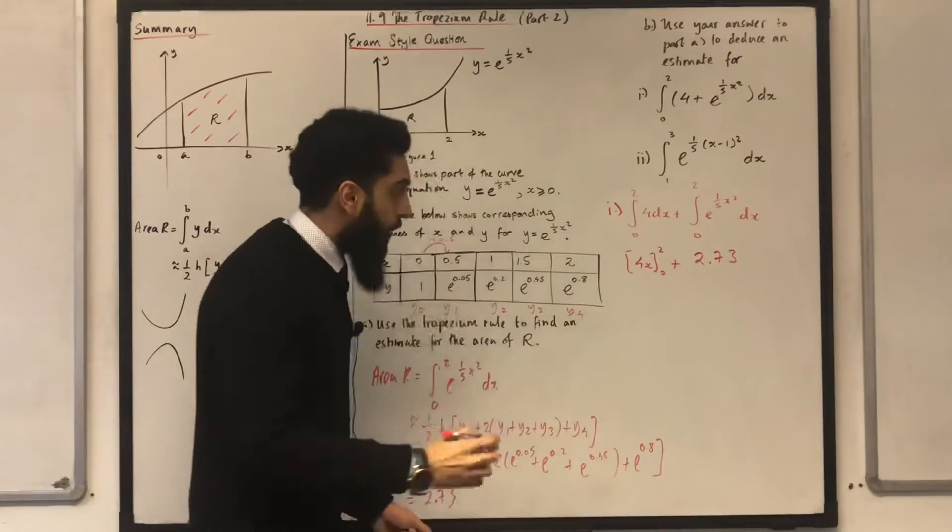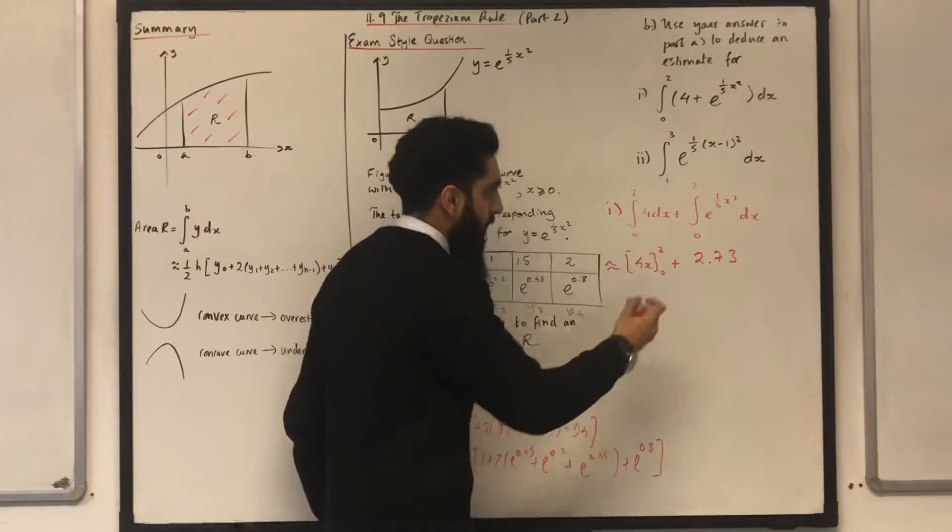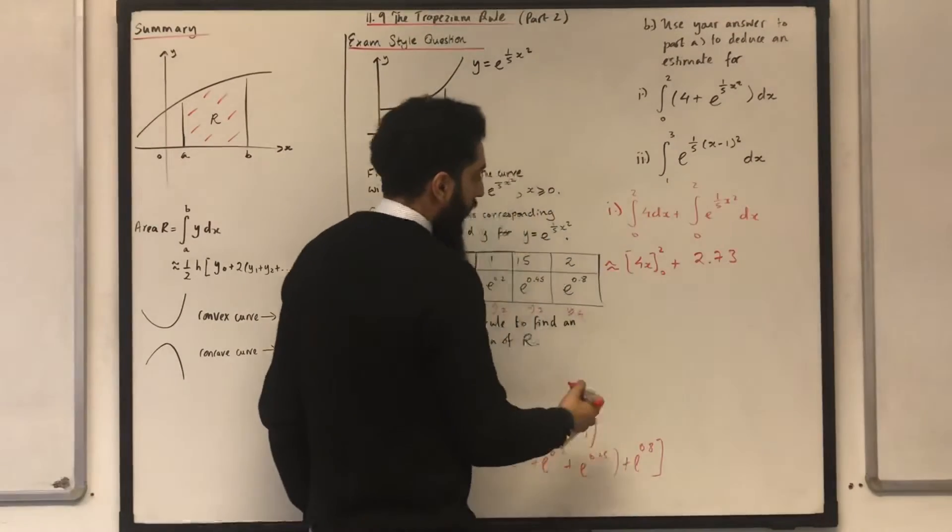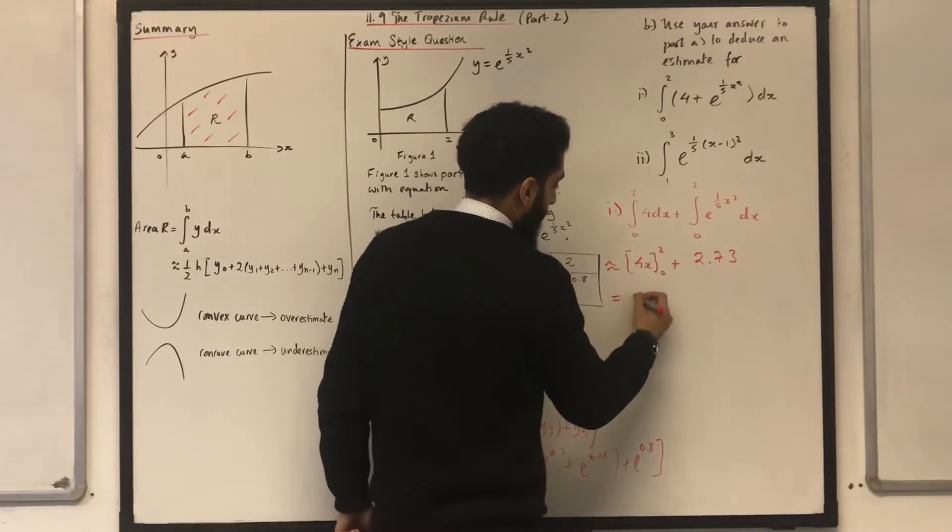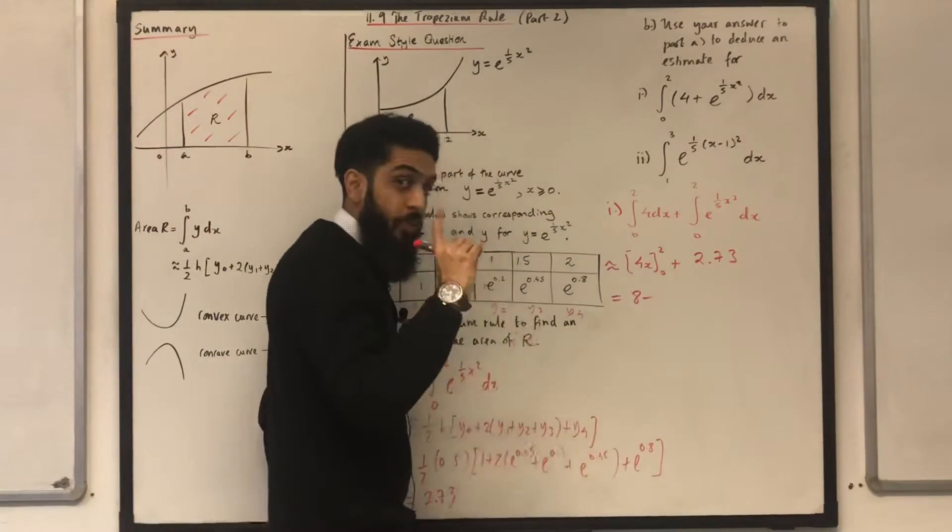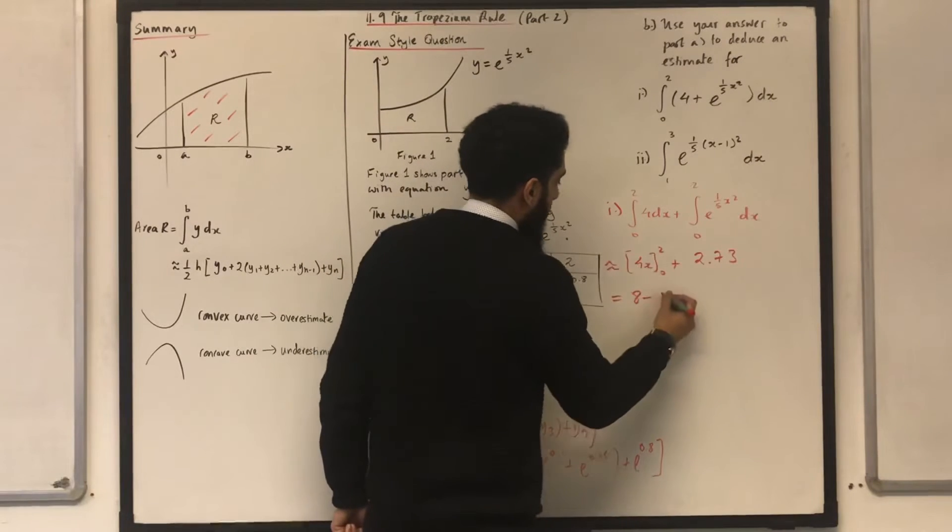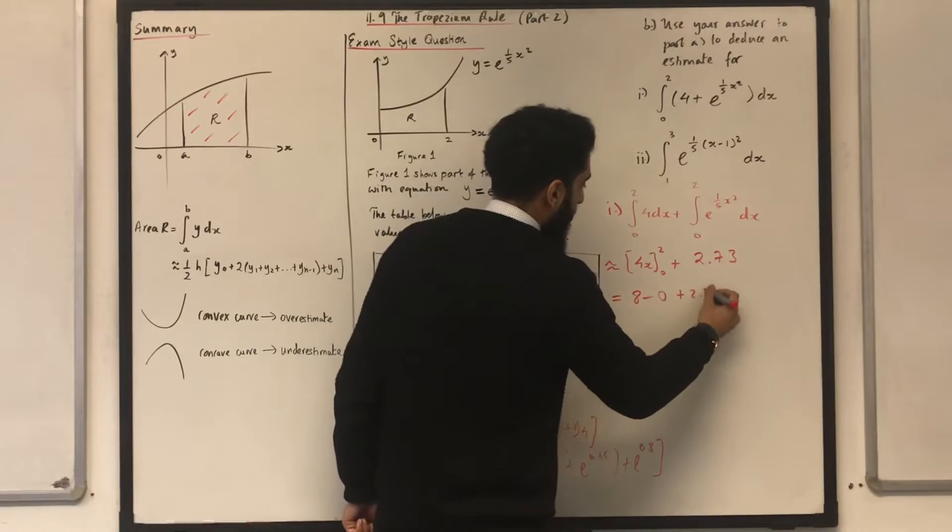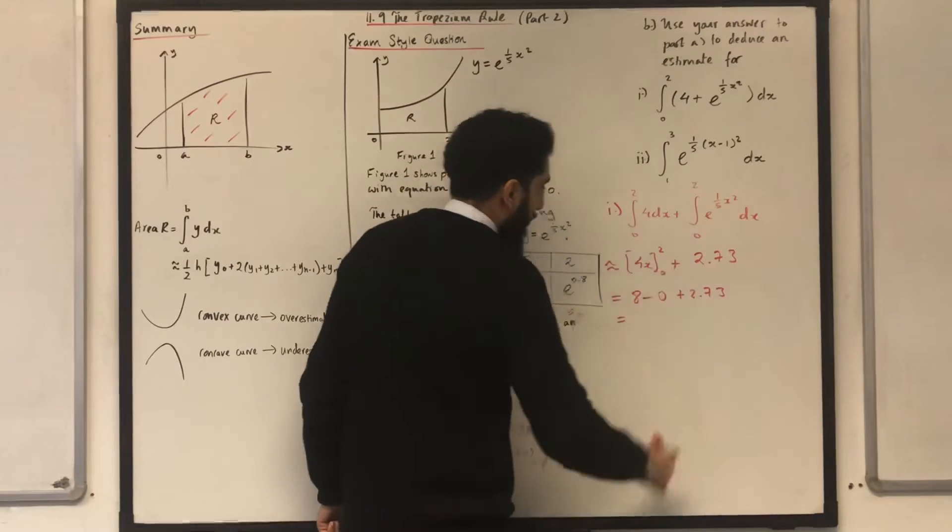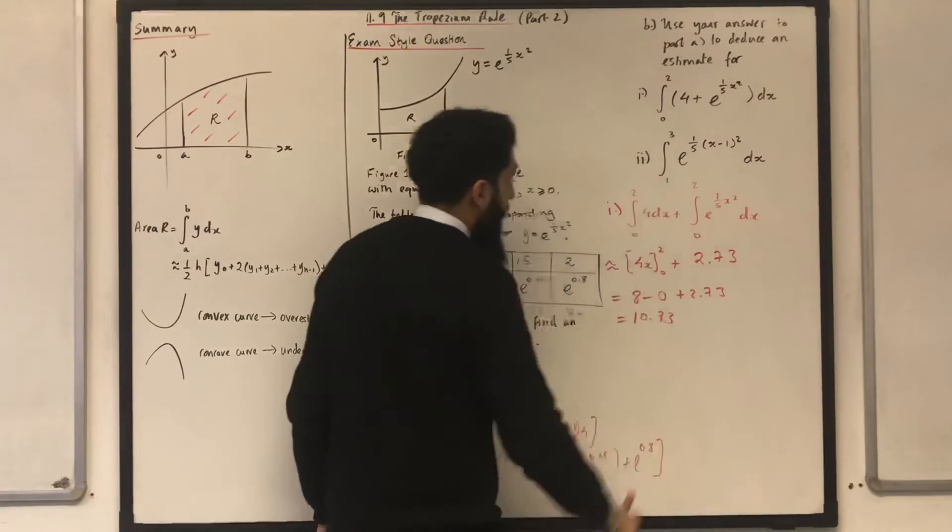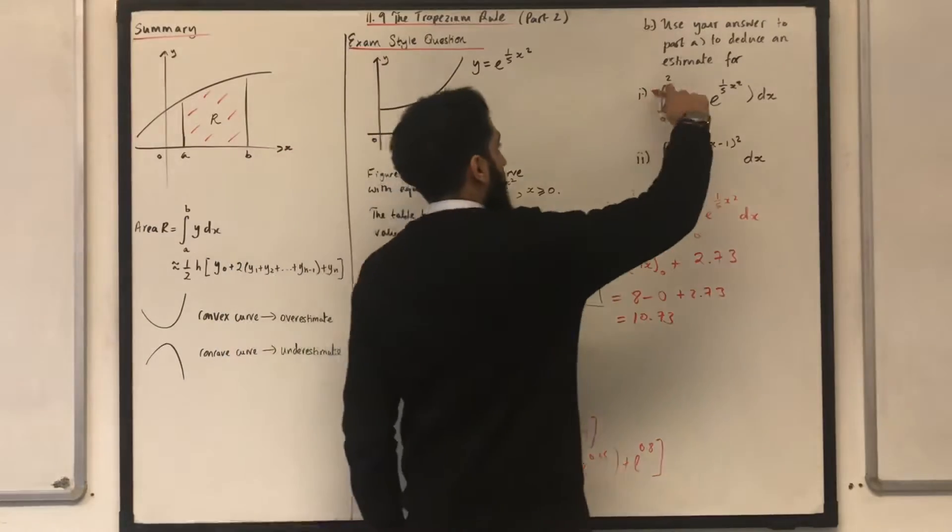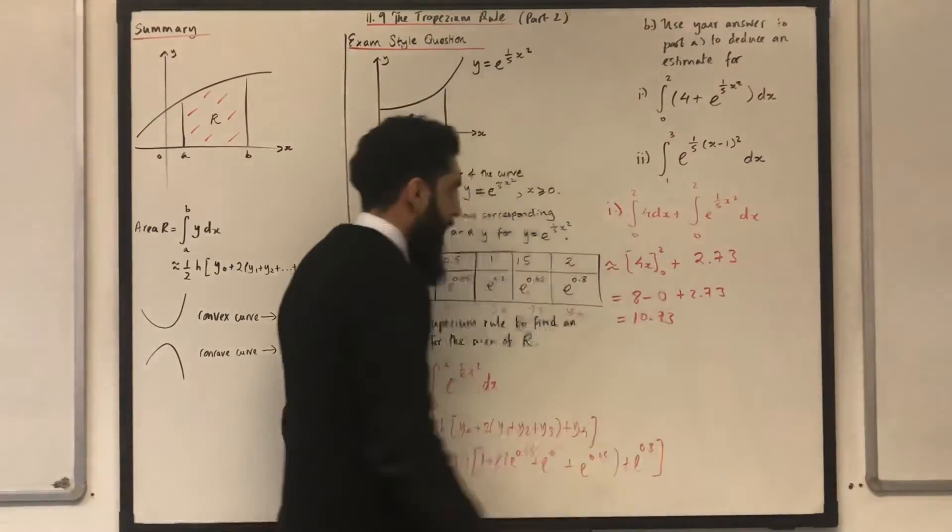I put the approximate sign over here because I've estimated this integral. What is my next step? I need to substitute the upper limit 2 into 4x to give me 8. Take away, substitute the lower limit 0 into 4x to give me 0, plus 2.73. This is equal to 10.73. Therefore, the approximation of this particular integral is just 10.73.